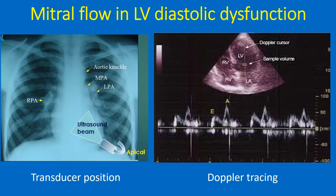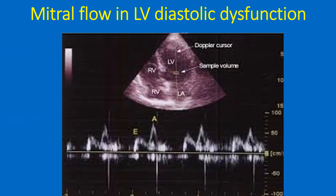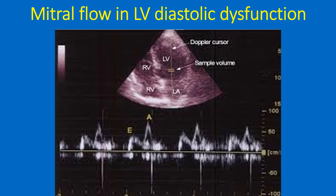Doppler interrogation of the mitral valve is usually done from the apex through the apical 4-chamber view. The transducer is placed directly over the apex beat and the echo beam is directed upwards. A good 4-chamber view of the heart is obtained showing all 4 chambers and both atrioventricular valves. The Doppler cursor is aligned along the long axis of the left ventricle passing through the mitral valve, and the sample volume is placed just distal to the mitral valve to pick up the flow in the left ventricular inflow.